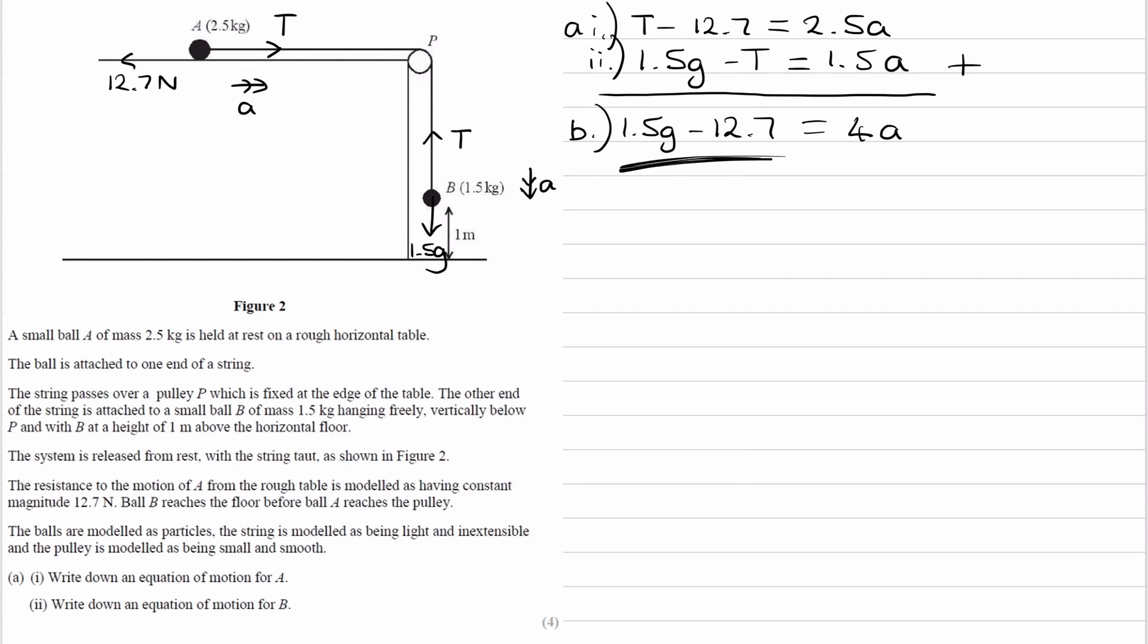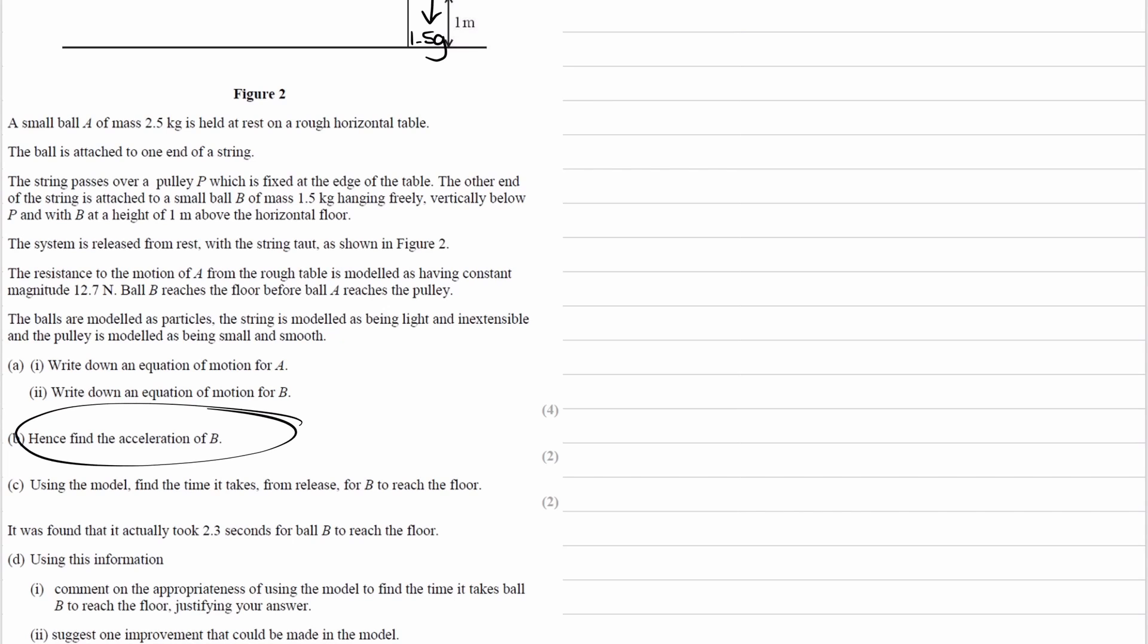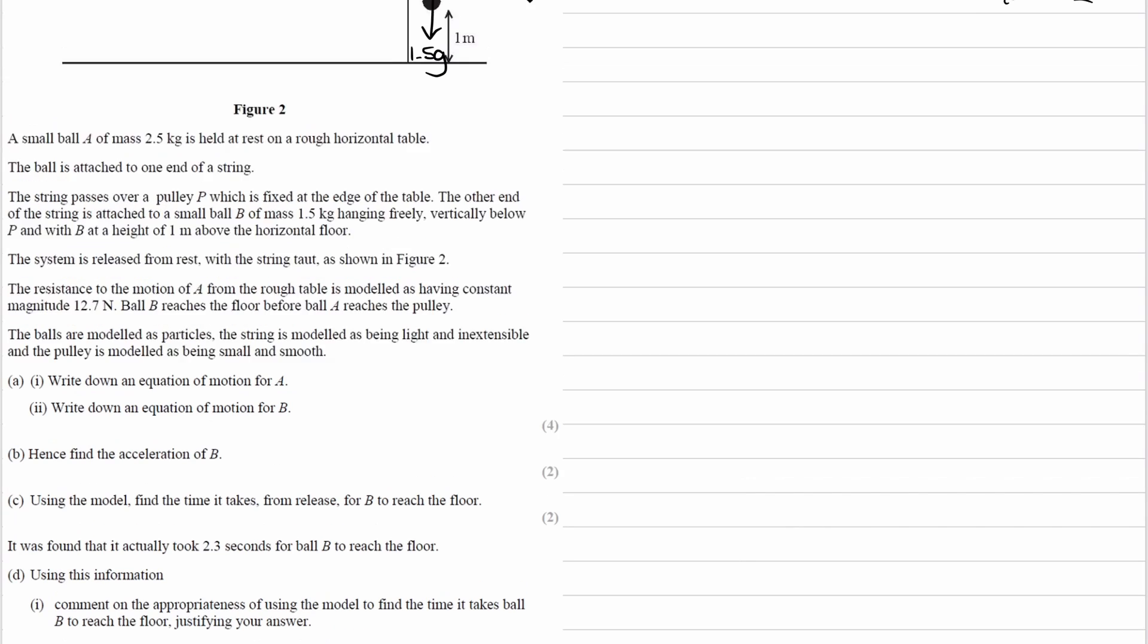You type this into your calculator, G is 9.8. The left-hand side ends up being 2. And then we get our acceleration to be 2 over 4, or 0.5. And that's part B done. We've worked out the acceleration of object B.